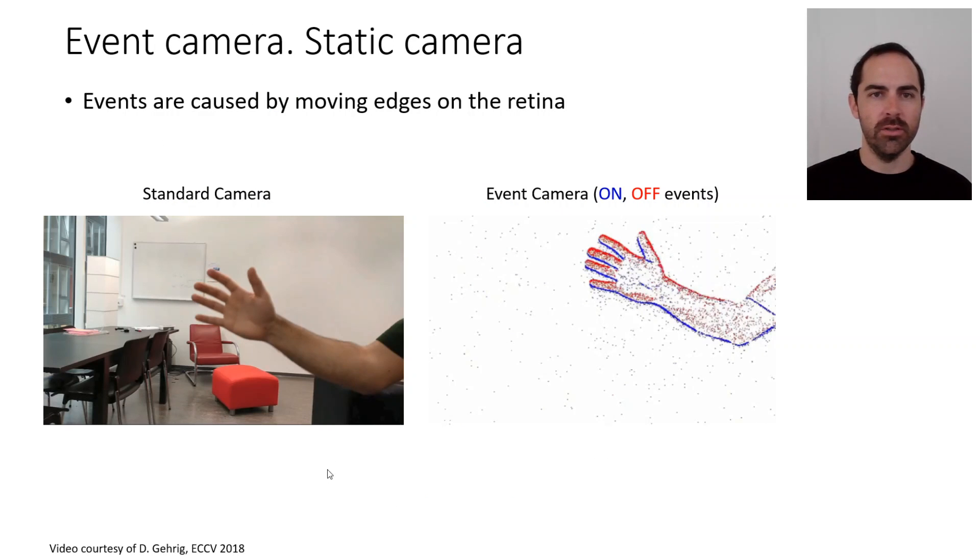Let's show the difference between the output of a standard camera, which would somehow model the sustained pathway, and the event camera, which is the transient pathway.